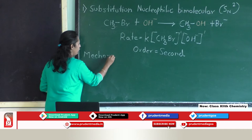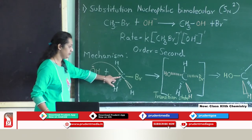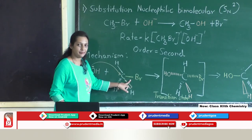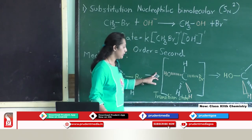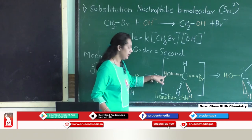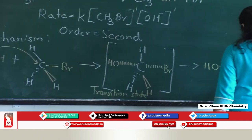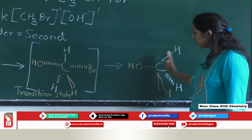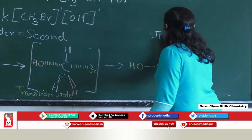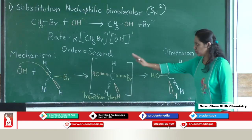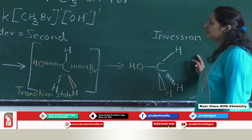Now we will see the mechanism of the SN2 reaction. The incoming nucleophile OH⁻ attacks on the carbon, and simultaneously the leaving group — the old C–Br bond — starts cleaving. Since bond formation and bond breaking occur simultaneously, no intermediate is formed; this stage is the transition state. Looking at the reactant and product, the configuration is obtained in the opposite way — this is known as inversion of configuration, because OH⁻ attacks from the opposite side as the leaving group.